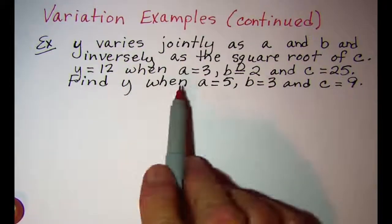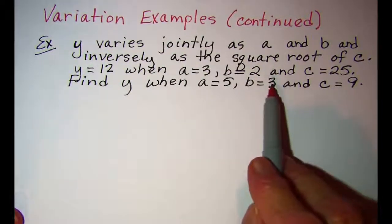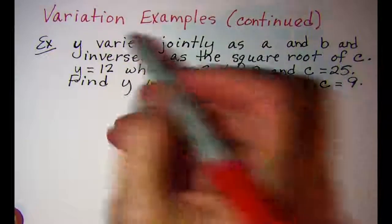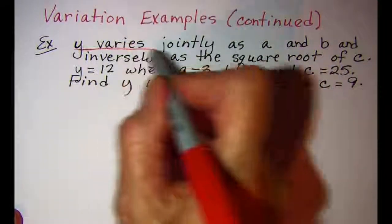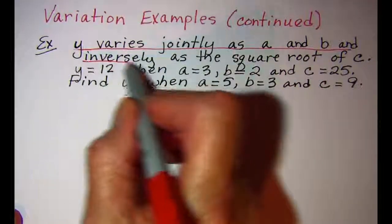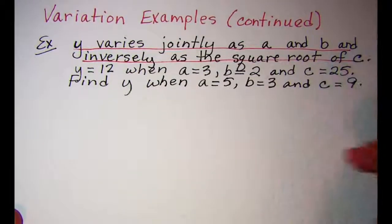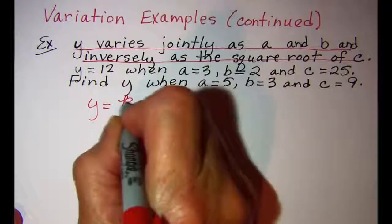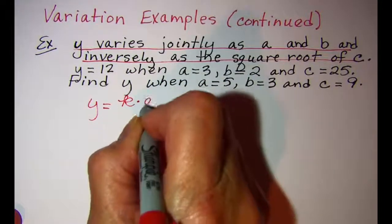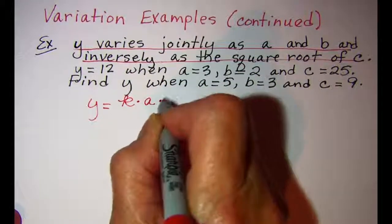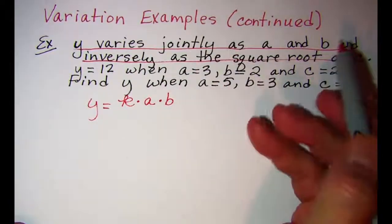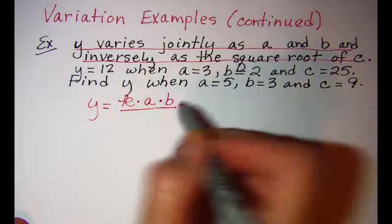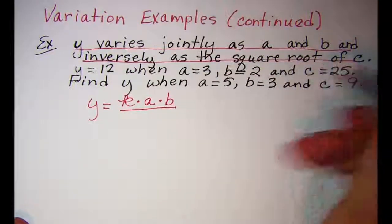Find y when a equals 5, b equals 3 and c equals 9. My first step would be to translate this into an equation that I can use to solve my problem. y varies jointly as a and b and inversely as the square root of c.